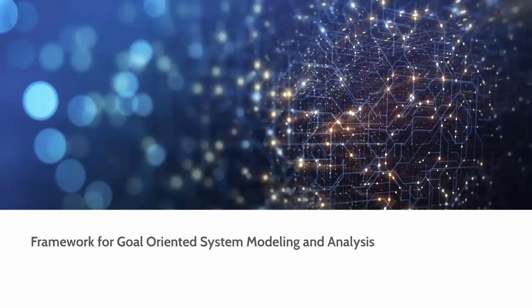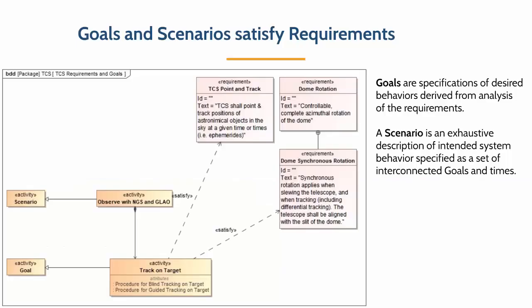How do we capture this framework? We start with a set of requirements, and goals are specifications of behaviors derived from analysis of those requirements. For example, we have a requirement for pointing, tracking, and synchronous dome rotation, and we derive a goal called 'track on target.' There can be many goals, and if you combine them together in a network, we are talking about a scenario — for example, a particular observation mode that requires track on target.